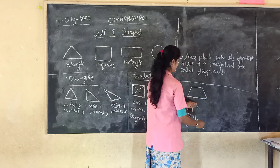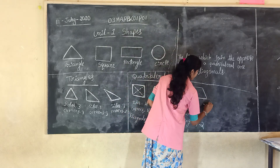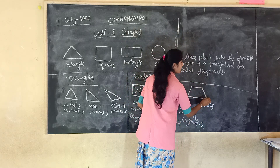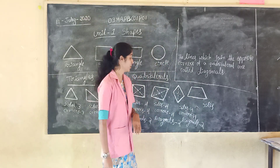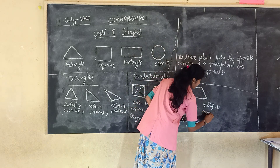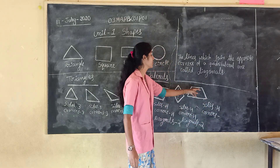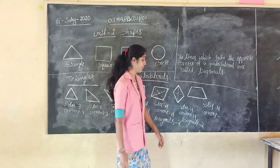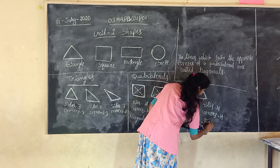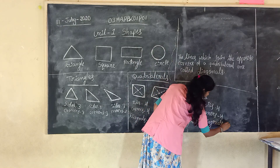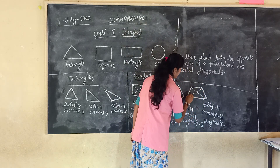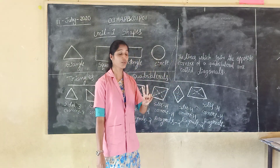And here in this quadrilateral, sides — one, two, three, four. Total: four sides. And corners — one, two, three, four. Total: four corners. And diagonals — one, two. So here: two diagonals.